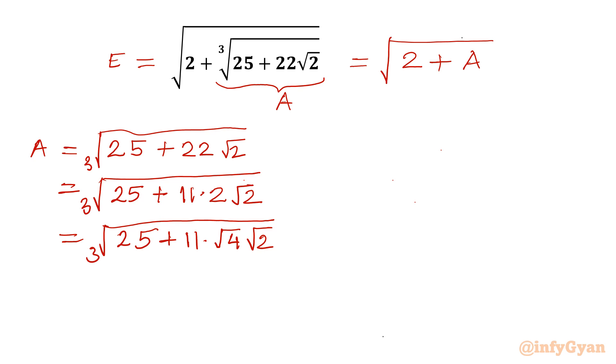Now we know that one property, square root A times square root B, we can write square root AB. So I can merge square root 4 and square root 2 as square root 8. So this will become cube root 25 plus 11 square root 8.